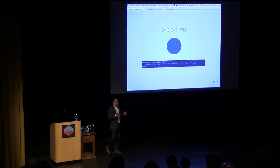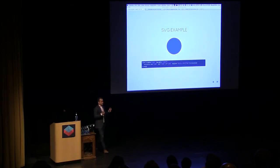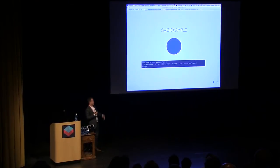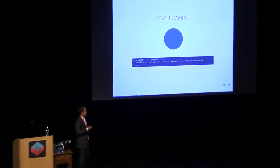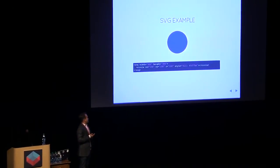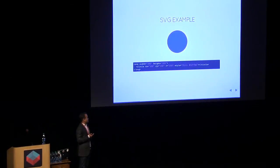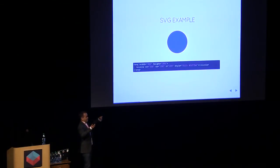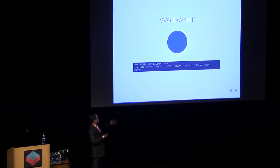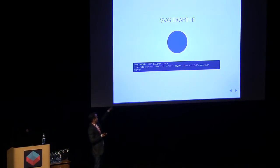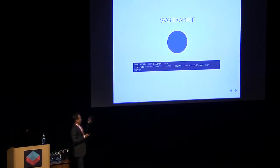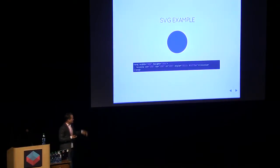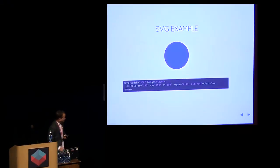Here's a simple example of drawing a circle using SVG. You open an SVG tag — it's an XML-based language — and inside you say 'I have a circle here, I'm going to put it at these coordinates, both CX and CY, I want the circle to have this radius R, and I want to fill it with this color,' which is the style property where you can put CSS rules.